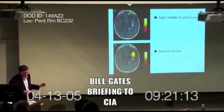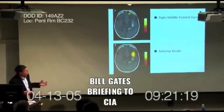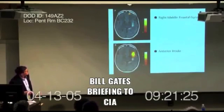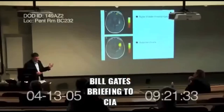In contrast, in marked contrast, here's an individual who would not particularly self-describe as religious. And when they're read a religious text, what you see is that this part of the brain called the anterior insula lights up. This is a part of the brain that's associated with disgust or displeasure on hearing something.